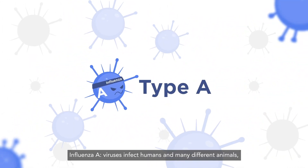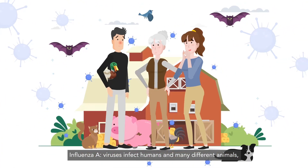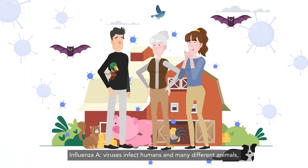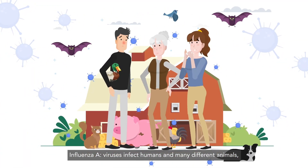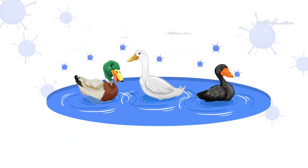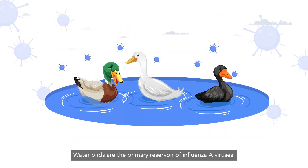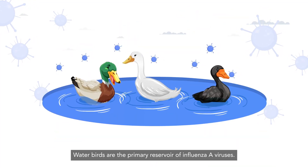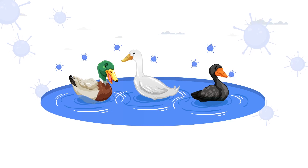Influenza A viruses infect humans and many different animals and can cause a pandemic. Waterbirds are the primary reservoir of influenza A viruses.